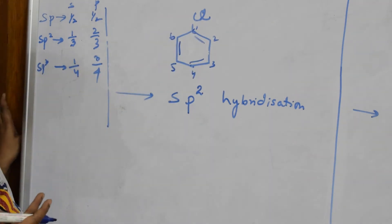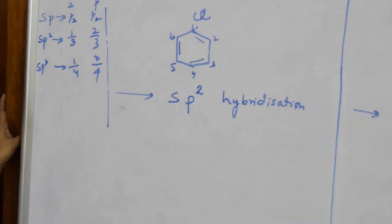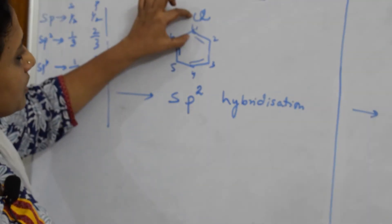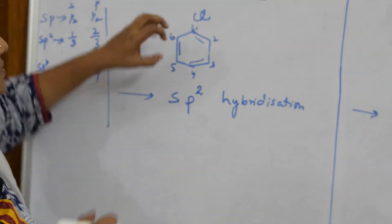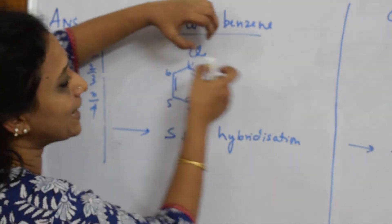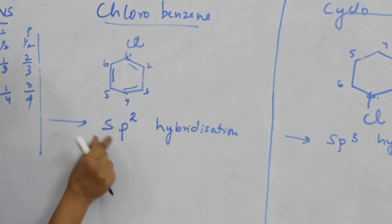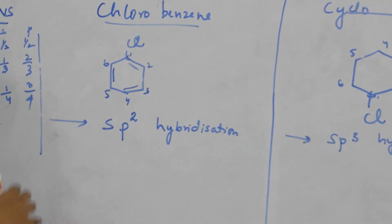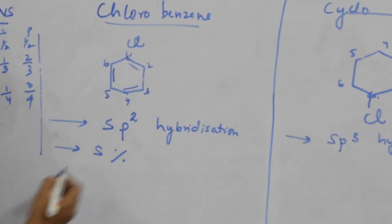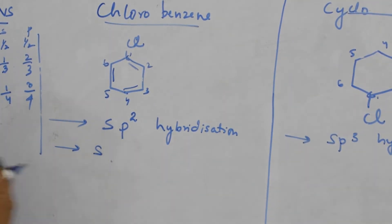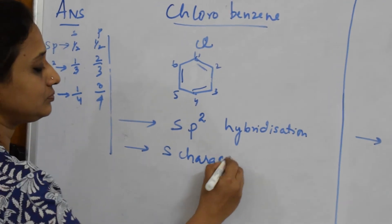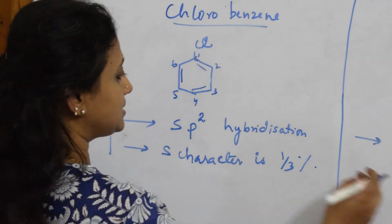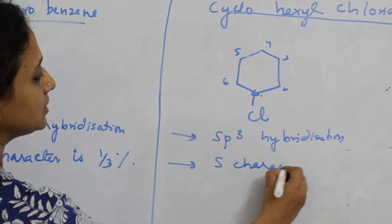When s character is more, the electrons are held closer to the nucleus — the bond is more compact. So the C–Cl bond in chlorobenzene (sp2) is tighter and closer to the nucleus compared to cyclohexyl chloride (sp3). Write: s character in chlorobenzene = 1/3; s character in cyclohexyl chloride = 1/4.